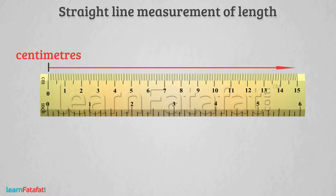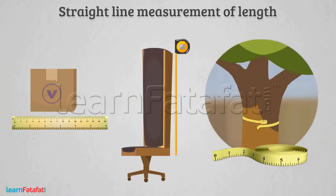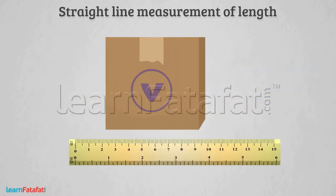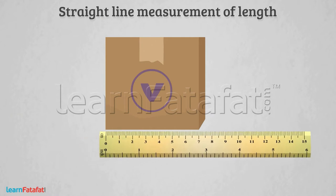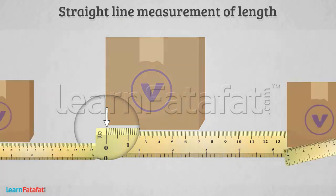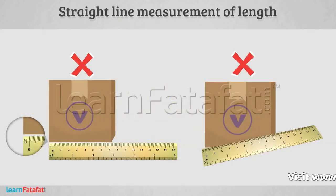For right measurement, select suitable device for measurement. To measure length of a small box, place the 15cm scale touching the object such that the zero mark aligns with the edge. Place the scale along the length of the box correctly as shown in the figure.